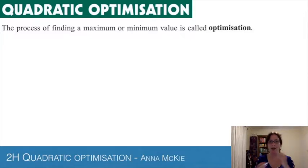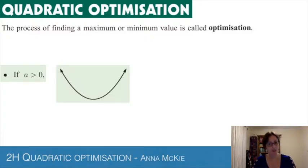The process of finding a maximum or minimum value is called optimization. That's what we're after - finding the maximum or sometimes the minimum point. Now if a is greater than zero, thinking of the quadratic y = ax² + bx + c in expanded form, the significance of that a value - if it's greater than zero, it will have a shape like this.